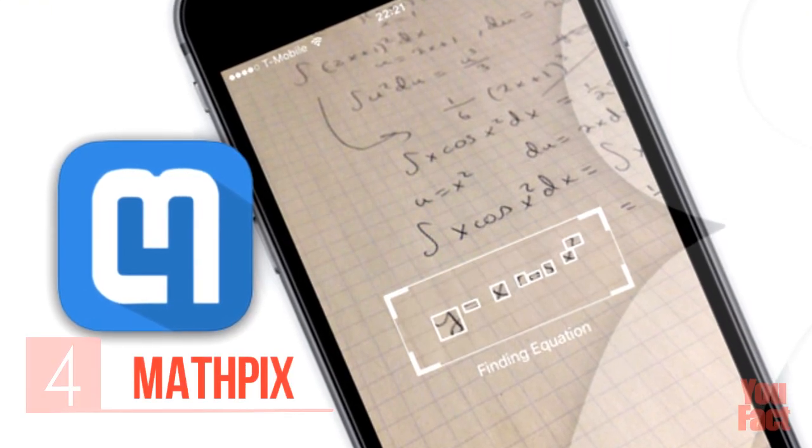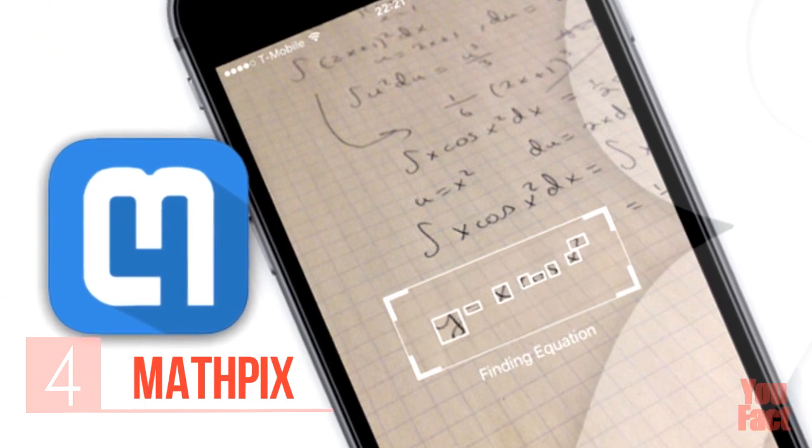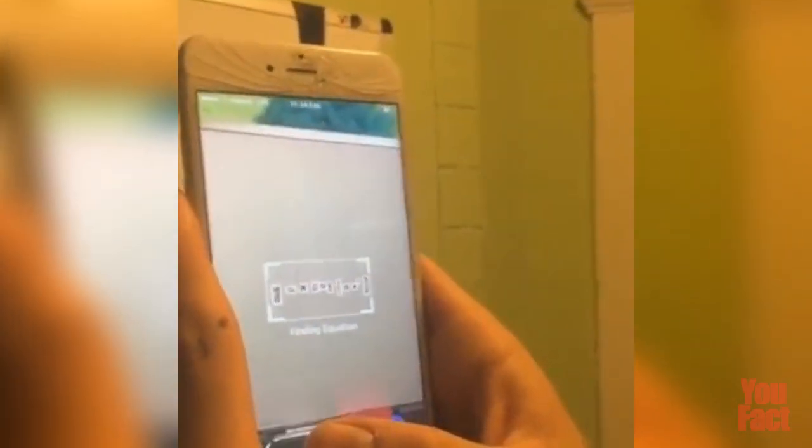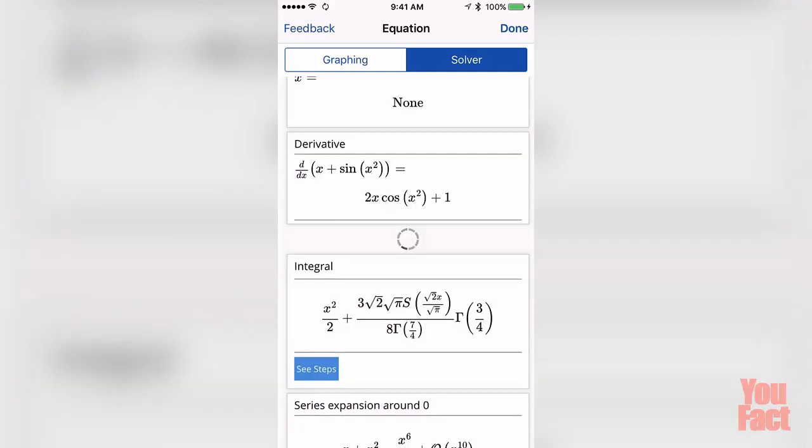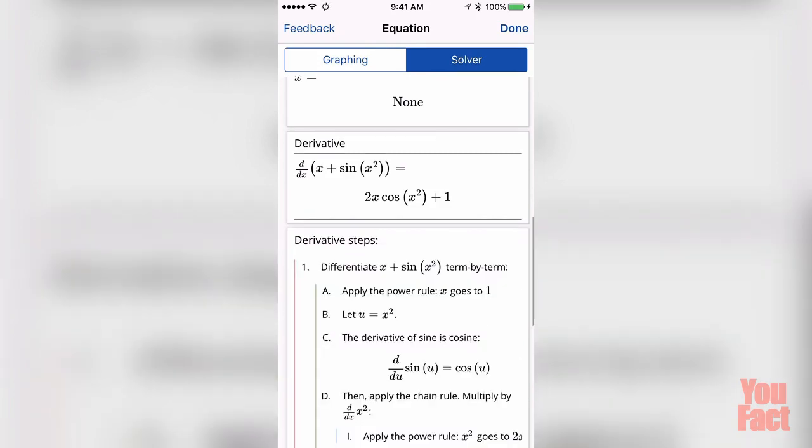United States developers have created the mobile app MathPeaks that is able to solve any equation that is written on a piece of paper. You just have to take a picture of this equation on your smartphone. The application is able to solve various types of equations, including integral ones.